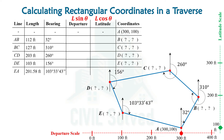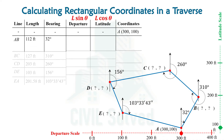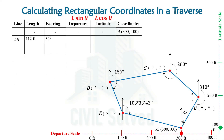In order to calculate the coordinates of point B, we need to calculate the latitude and departure of AB line. On doing the calculation, we get the latitude and departure of AB line. To calculate the coordinates of point B, we need to add the latitude and departure of AB line to the previous point, which is point A.